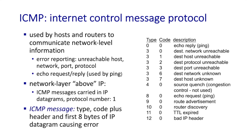An ICMP message has a one-byte type field, a one-byte code field, a two-byte checksum field, and then the header and up to eight bytes of the IP datagram that caused the ICMP message to be issued. For example, it might contain the first eight bytes of the datagram whose TTL was exceeded. You can see the type and code fields shown here. Note that type 11, code 0 is the ICMP TTL expired message, meaning a router received a datagram, decremented the TTL field, and the TTL is now zero. This message is key to how traceroute works.